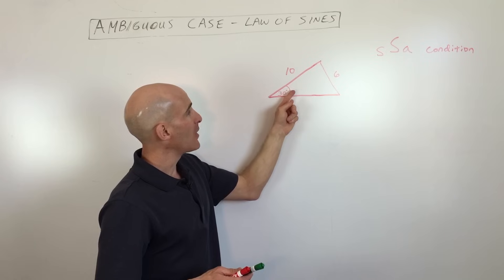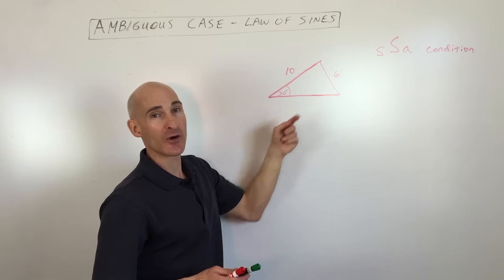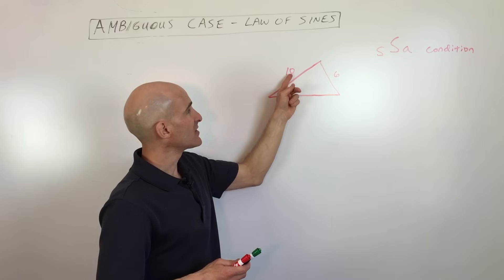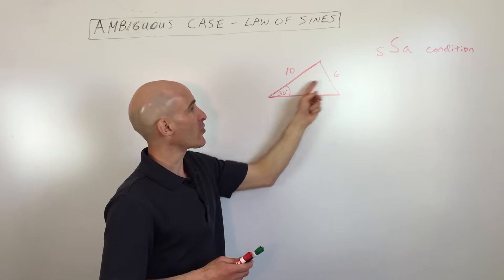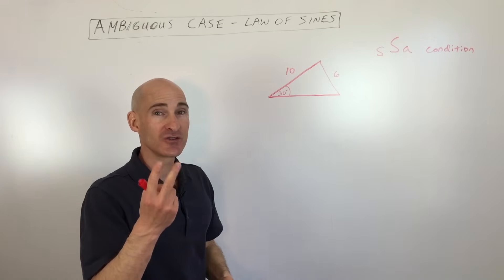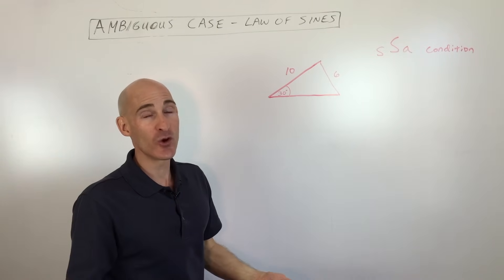The only issue though here is that the way this triangle is drawn right now, it's not what they call rigid. So they're giving us this angle, and they're giving us this side, and they're giving us this side across from this angle, but there's the potential for one triangle, two triangles, or even no triangles.